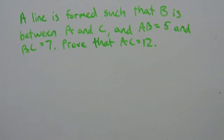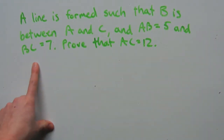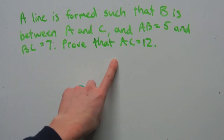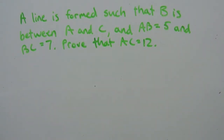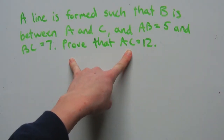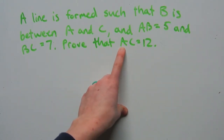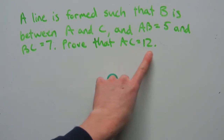Here's our problem: a line is formed such that B is between A and C, AB equals 5, and BC equals 7. Prove that AC equals 12. Step one — understand the conjecture to be proven: we need to prove that AC equals 12, which is the measurement of segment AC.